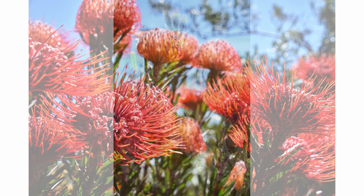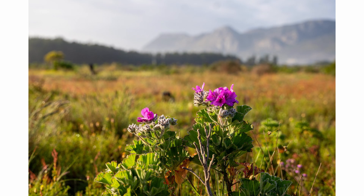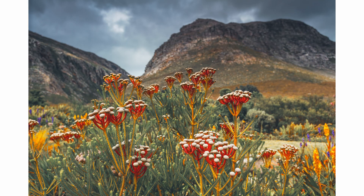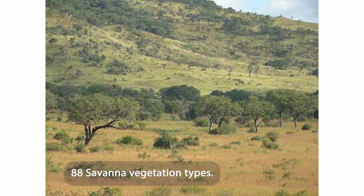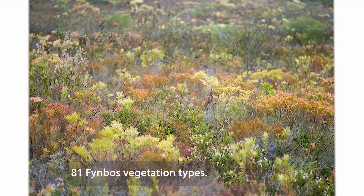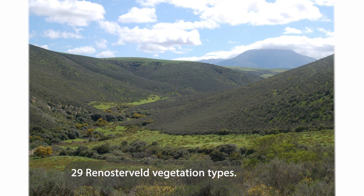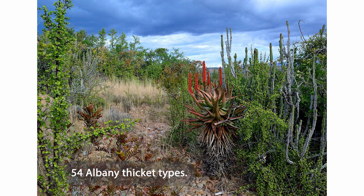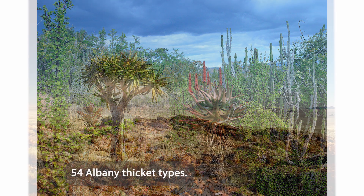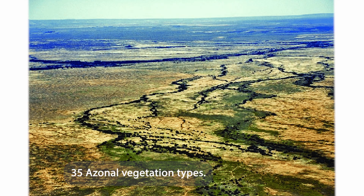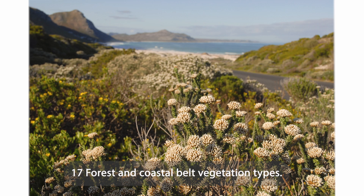Our country's vegetation is categorized into 471 unique vegetation groups. This classification is vital for our restoration work and includes 88 savannah vegetation types, 73 krausfeld vegetation types, 81 feinbuss vegetation types, 29 renosterfeld vegetation types, 65 succulent karu vegetation types, 54 albany thickets, 29 nama karu vegetation types, 35 azernal vegetation types, and 17 forest and coastal belt vegetation types.